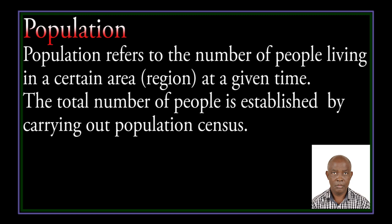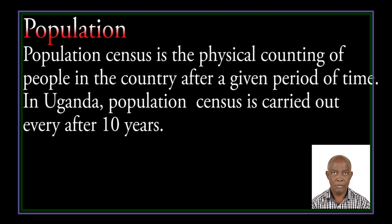The population refers to the number of people living in a certain area or region at a given time. The true number of people is established by carrying out a population census. A population census is the physical counting of people in the country after a given period of time. In Uganda, population census is carried out every 10 years.